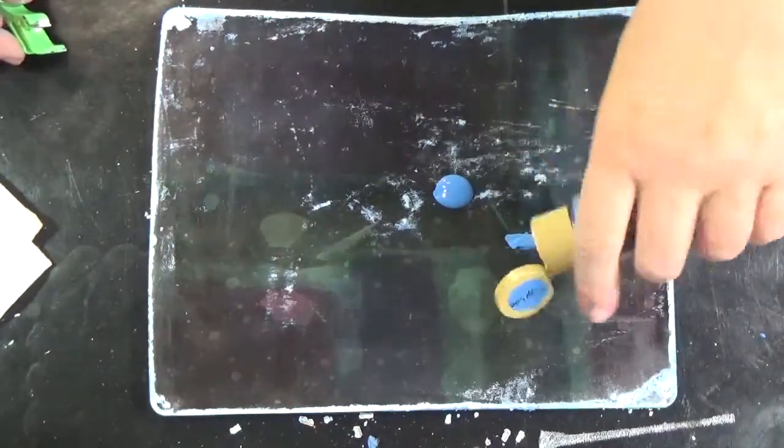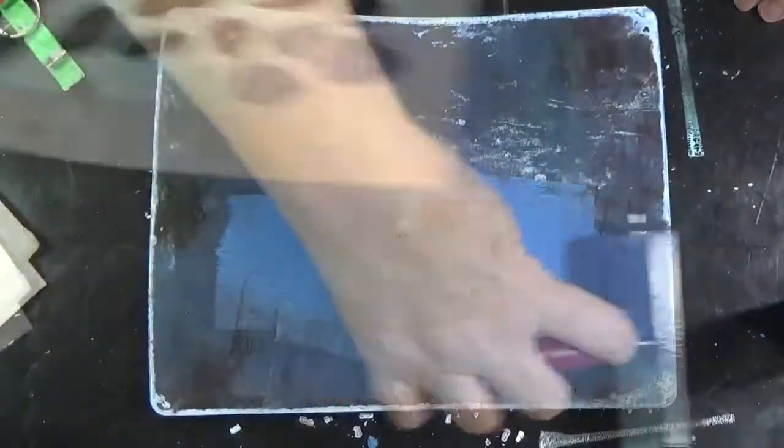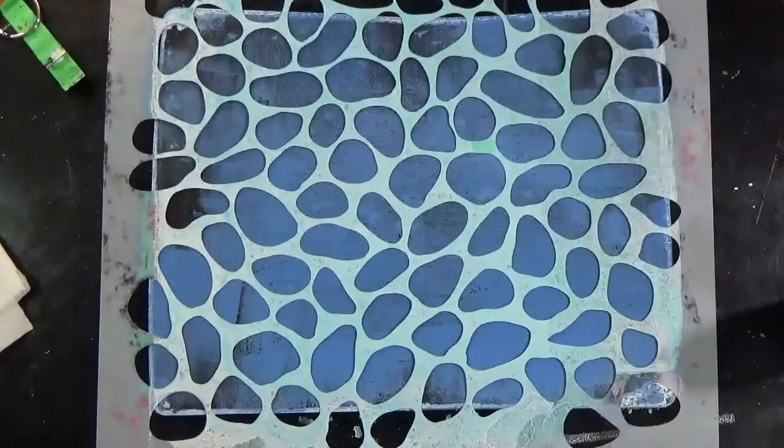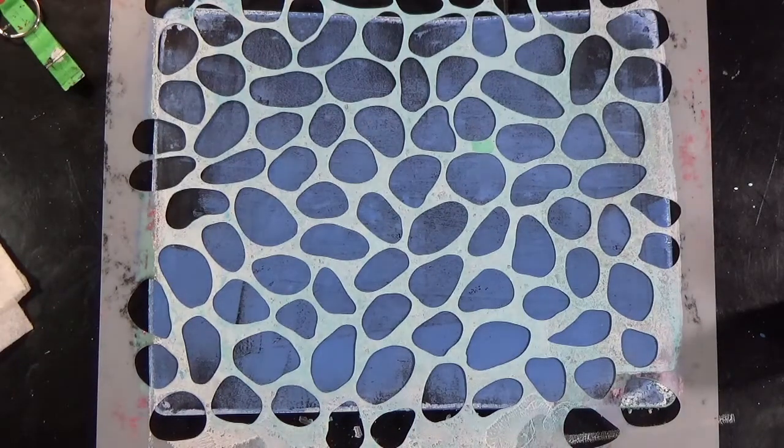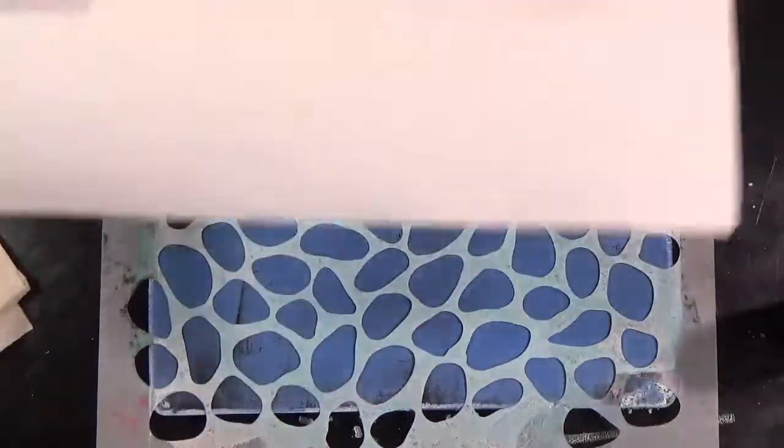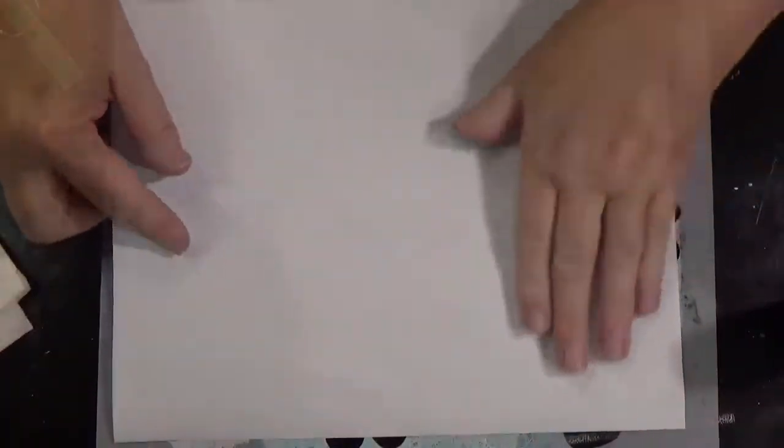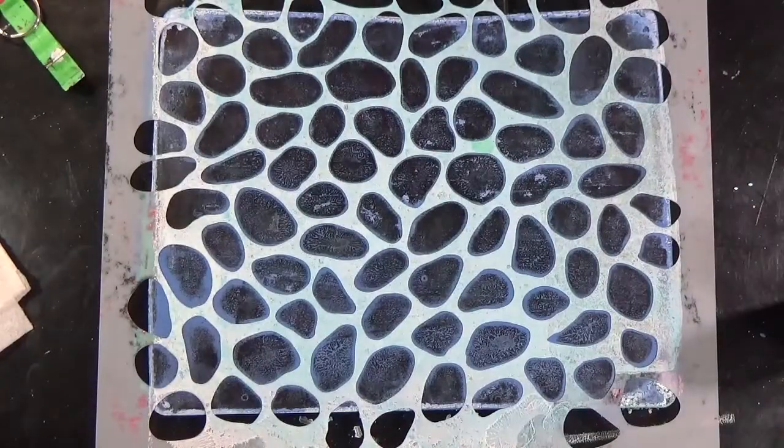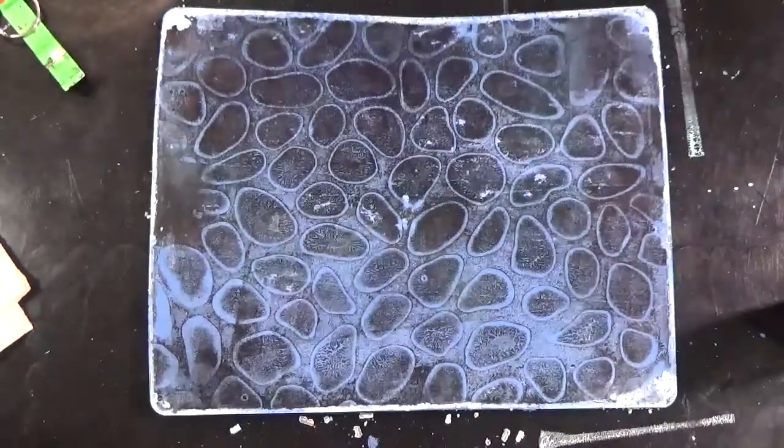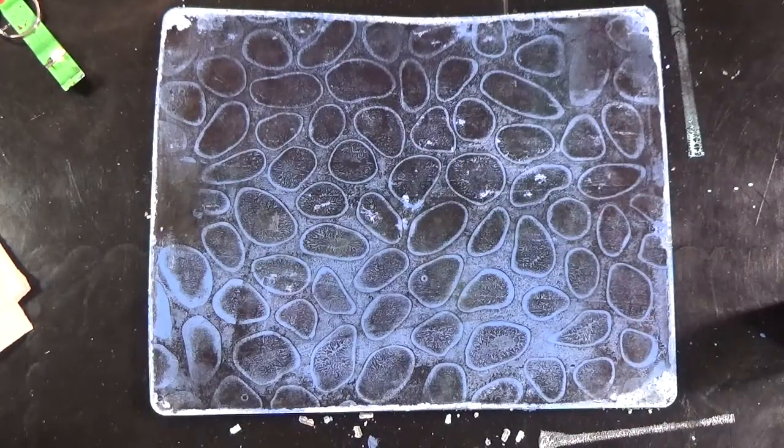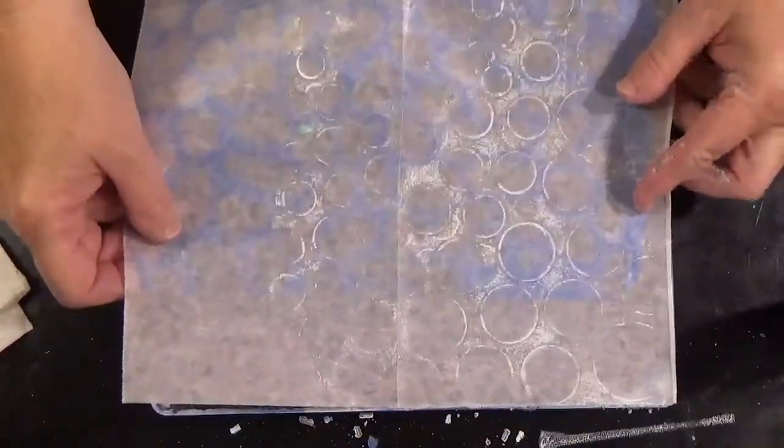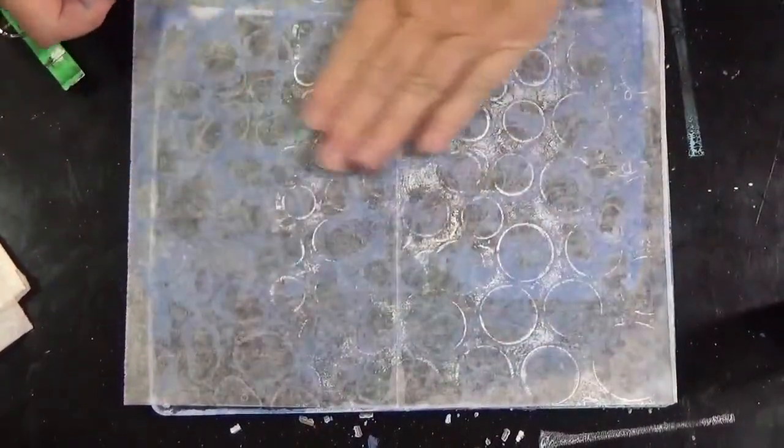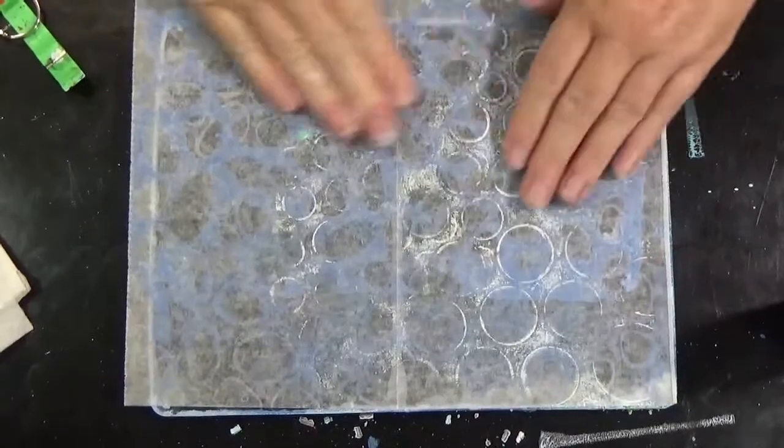Now we're using sapphire with another Crafters Workshop stencil called Pebbles, number TCW190. Most of these stencils are still available online. I googled them and found them on a combination of Amazon and various other locations. Look at what I have left on my plate. I think that is going to be beautiful. I'm going to use a piece of deli paper to pull up any remaining pattern.